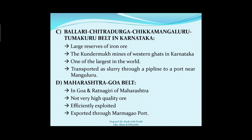The third is the Ballari-Chitradurga-Chikkamagaluru-Tumakuru belt in Karnataka. Large reserves of iron ore are found here. The Kudremukh mines of the Western Ghats in Karnataka — one of the largest iron ore deposits in the world — are located here. This is a one-mark question that may be asked in exams. The iron ore is transported as slurry through a pipeline to a port near Mangaluru.